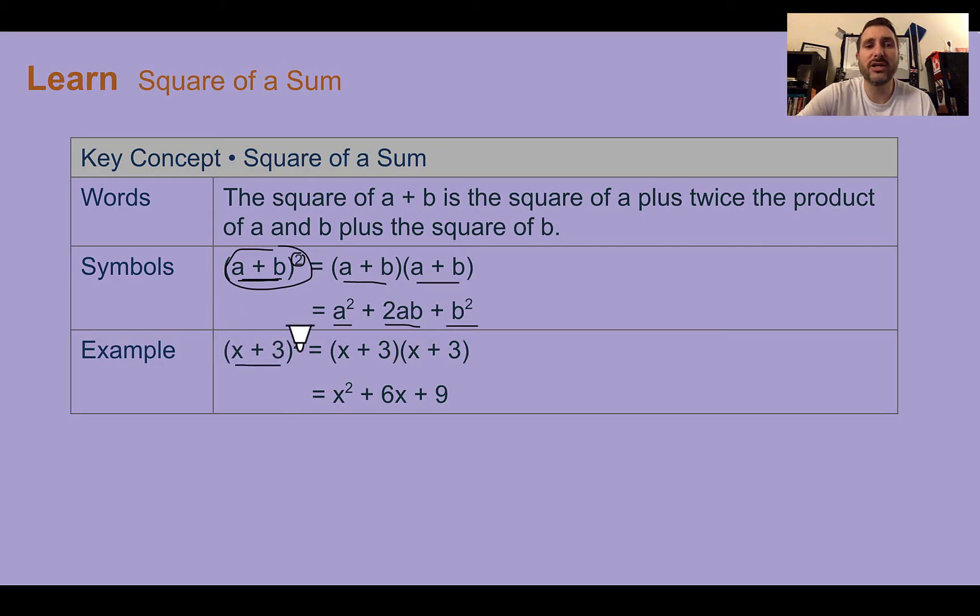So we can see here in our example, we have (x + 3)². That means (x + 3)(x + 3). We could FOIL this out. First, we have x times x is x². Outside, we have 3 times x and get 3x. Inside, we have 3 times x and get 3x. And last, we have 3 times 3 is 9. The inside, the 3x and the 3x together would make 6x.